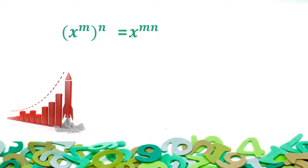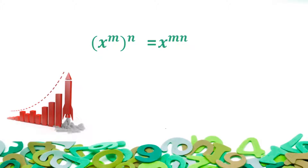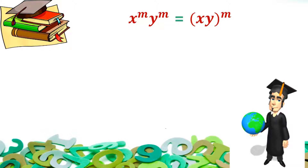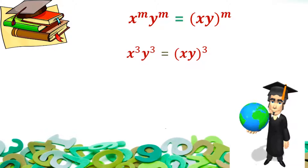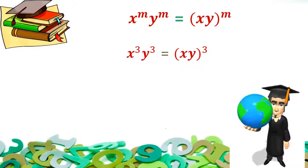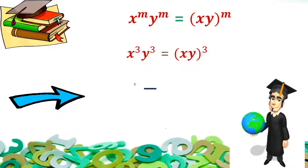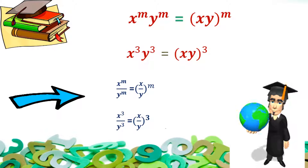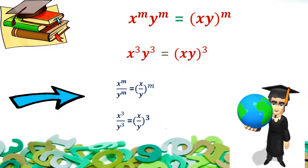The next rule is: x raised to power m, with the whole raised to power n, is equal to x raised to power m into n. For example, x raised to power 3, whole raised to power 5, is equal to x raised to power 15. Also, x raised to power m into y raised to power m is equal to x into y, whole raised to power m — for instance, x cube into y cube equals x into y, whole raised to power 3. Similarly, x raised to power m divided by y raised to power m is equal to x by y, whole raised to power m — so x cube by y cube equals x by y, whole cubed.